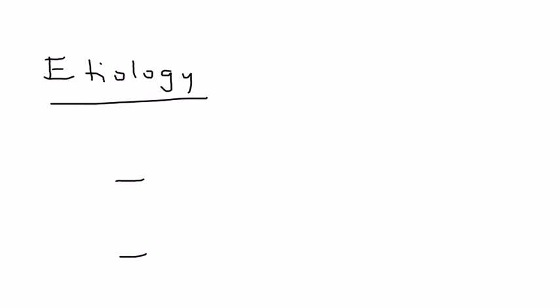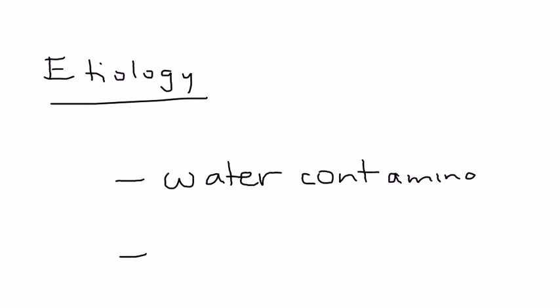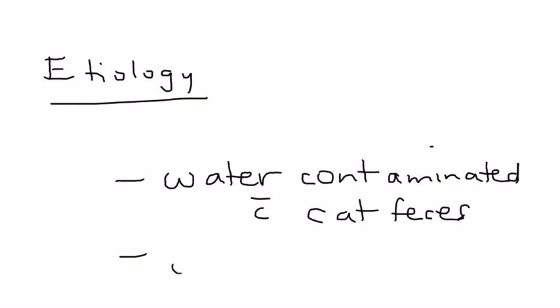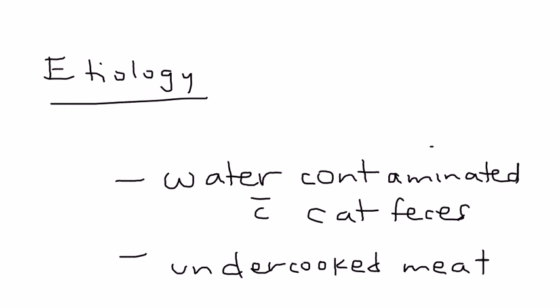Toxoplasmosis is most commonly acquired through two mechanisms. The first is contamination from water, in particular water contaminated with cat feces. The second is undercooked or inadequately cooked meat. Those are the two main ways a pregnant woman can get toxoplasmosis.